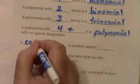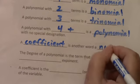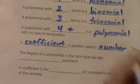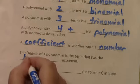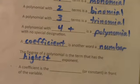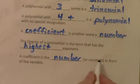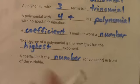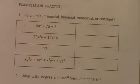A coefficient is another word for a number. The degree of a polynomial is the term that has the highest constant exponent. A coefficient is the number or constant in front of the variable. So a bunch of terms to help us understand our homework a little bit.